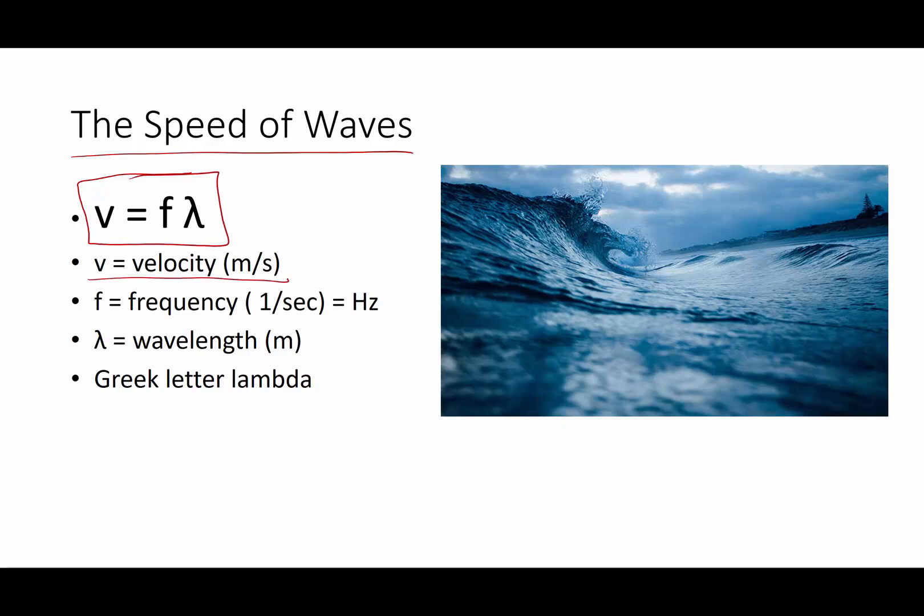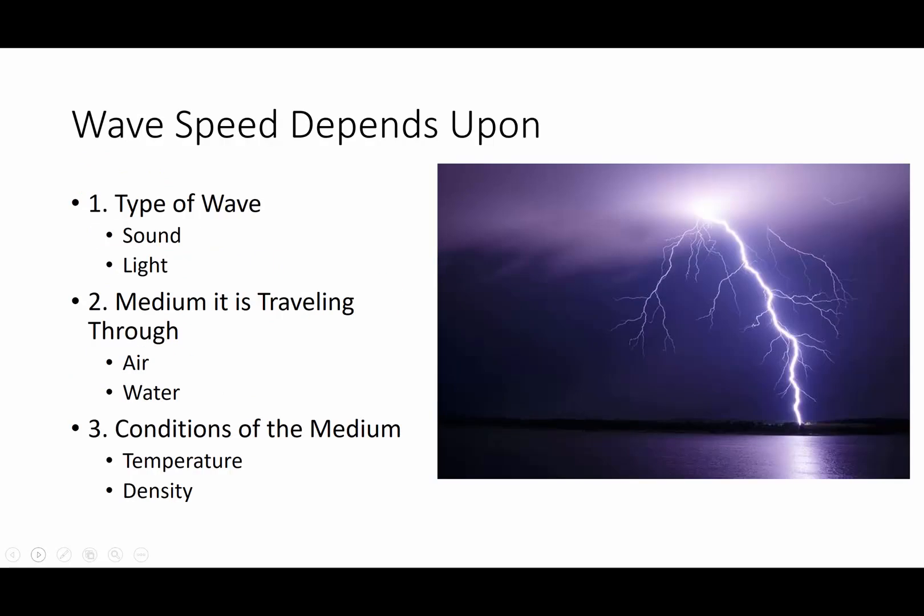V for velocity in meters per second. Lowercase f is frequency. If you recall, frequency is how many of something per second in the metric unit hertz. And this is our Greek letter lambda, and that is wavelength. So we're going to use this equation to determine the speed of waves.